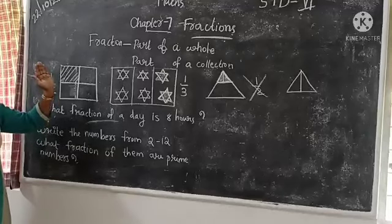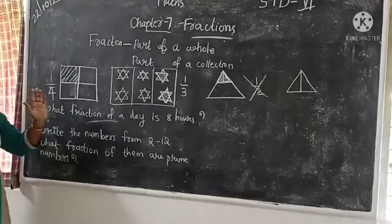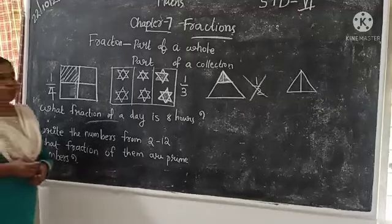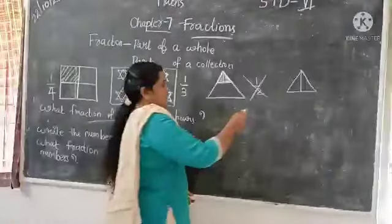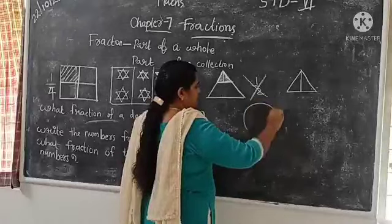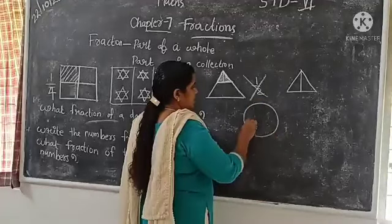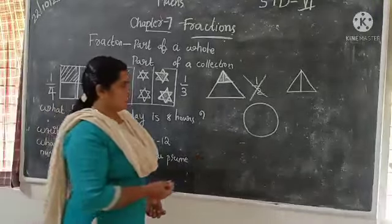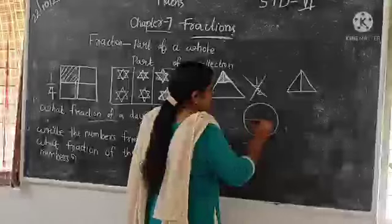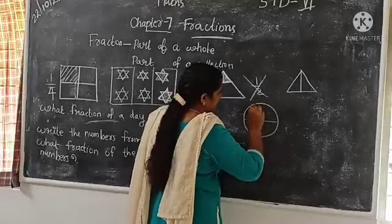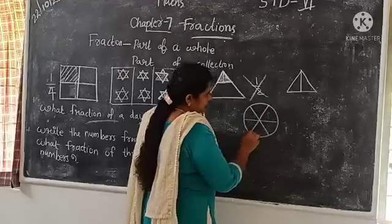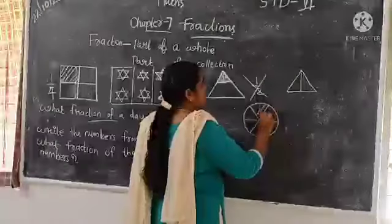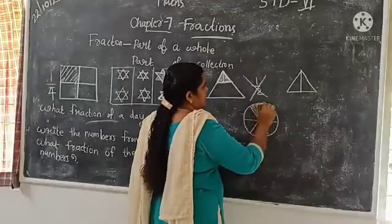Now, the fraction is a part of a whole. One part of a collection. Let's show you a circle. Shade one by six of the circle. One by six parts. That is equal parts. We will divide.